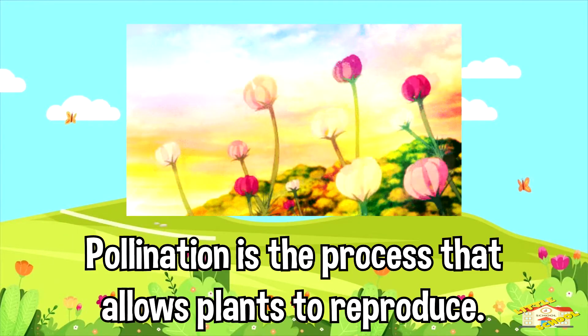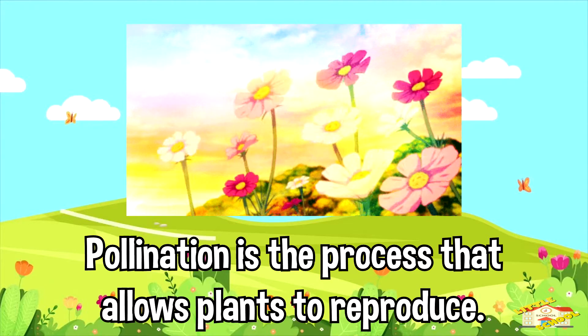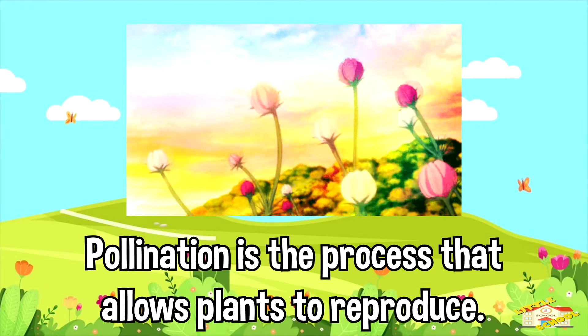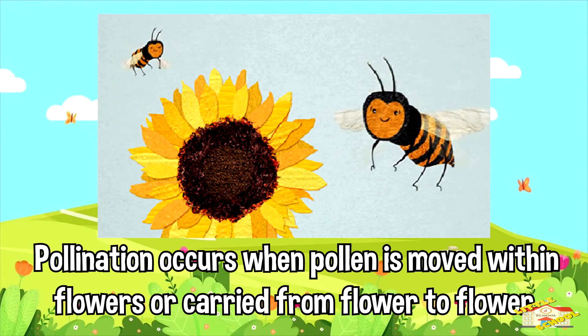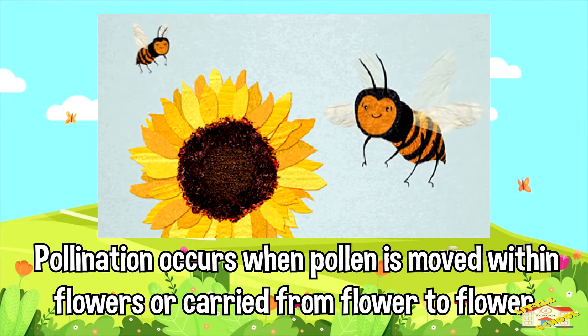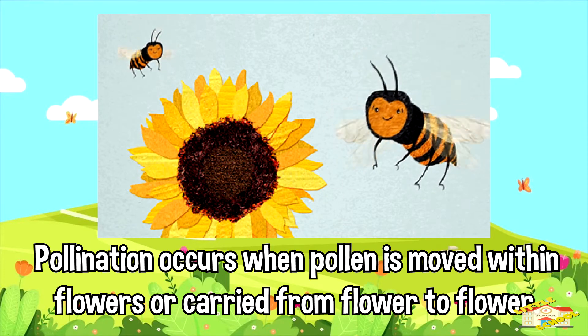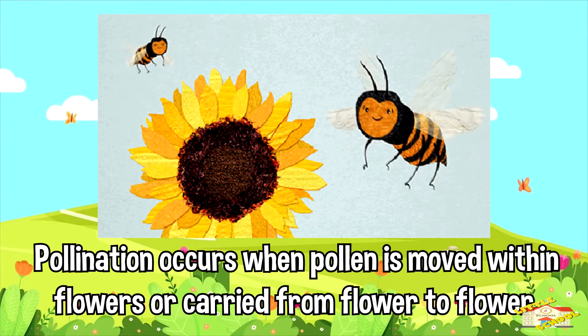Pollination is the process that allows plants to reproduce. Pollination occurs when pollen is moved within flowers or carried from flower to flower.